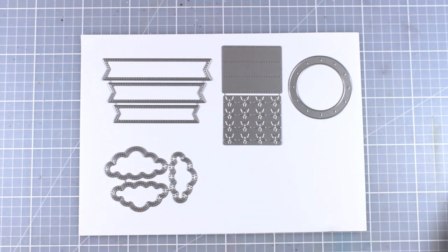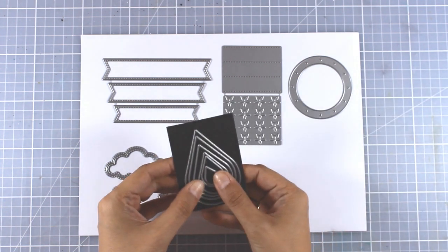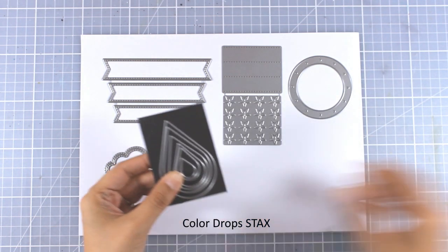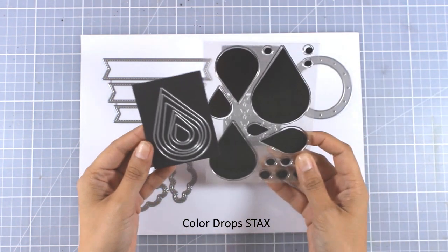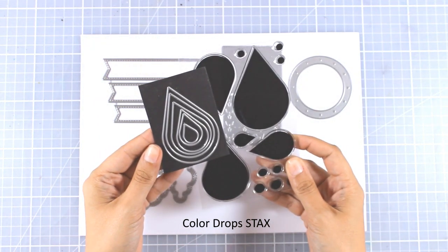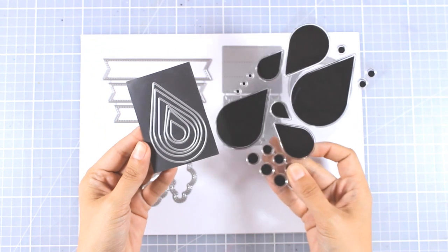Here are the Color Drops dies. There are six different dies in one set. You can combine them with the Color Drops stamp set or use them on their own.